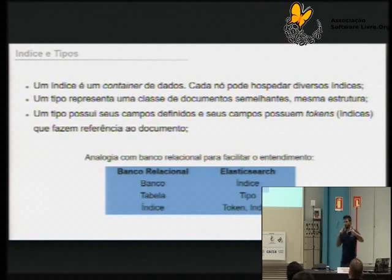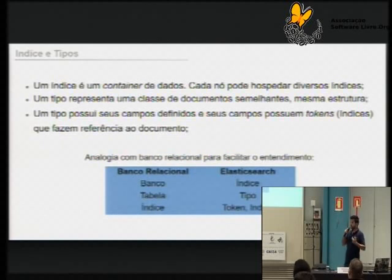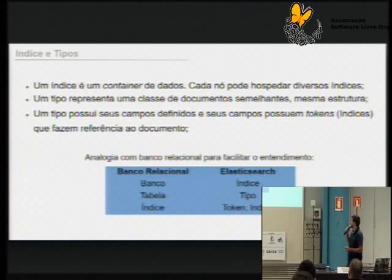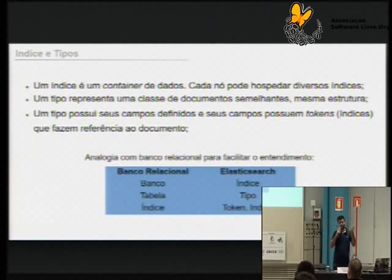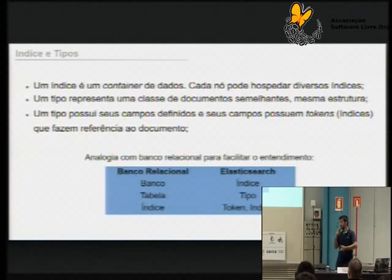Dentro do meu índice eu vou ter vários tipos. O meu tipo é como se fosse uma tabela, e dentro do meu tipo eu tenho meus documentos — cada documento é como se fosse uma linha da minha tabela. Um índice que eu tenho no banco relacional, no Elasticsearch trato como um token ou também como um índice. Então a palavra índice tem um significado duplo no Elasticsearch: eu posso estar me referindo tanto ao meu database quanto ao índice de referência àquele documento.